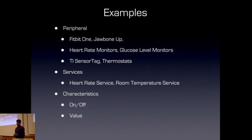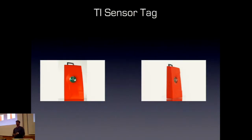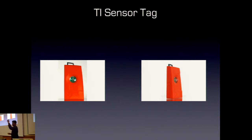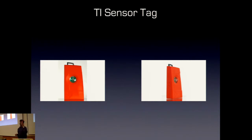So you have peripheral, central, services, and characteristics. For the demo, I'll be using this device called the TI SensorTag. The only reason I use it is it's $25 including international shipping. And it's not just one single Bluetooth sensor — it has six or seven sensors: room temperature, altitude, barometer, pressure sensors, infrared temperature, and more. You can order it online from TI.com. The contactless IR thermometer is what we're going to use for this demo.